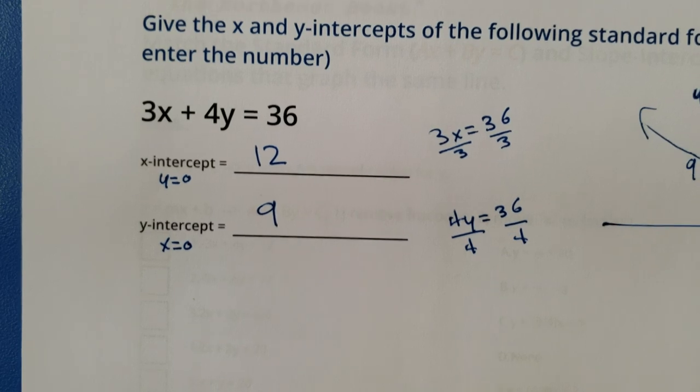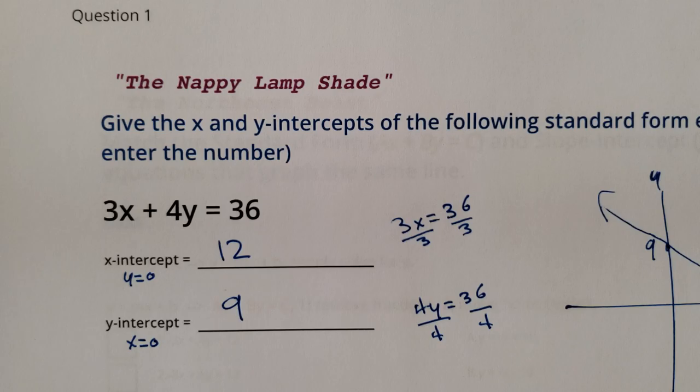When you hide the y, it's like plugging in a zero for y. And then when you hide the x, it's like plugging in a zero for x. All right, there you go. That's the hide and divide method. That's how you find x and y-intercepts very quickly. The nappy lamp shade.